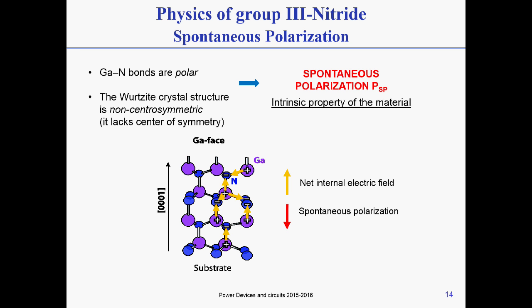This spontaneous polarization derives from the fact that the bonds between the atoms of gallium and nitrogen are polar, and the structure that we have seen is non-centrosymmetric, which means it lacks a center of symmetry.